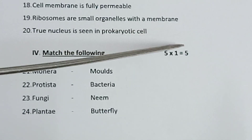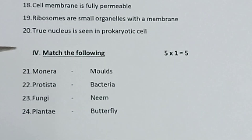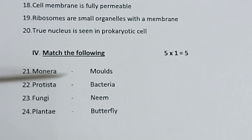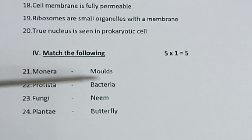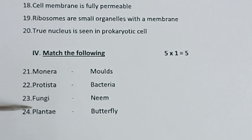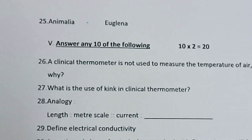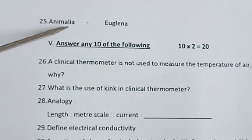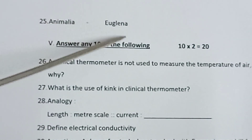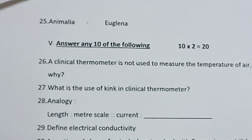Roman numeral four: Match the following. 5 into 1 is equal to 5. Left hand side — Monera, Protista, Fungi, Butterfly, Animalia. Right hand side (correct answers) — Moles, Bacteria, Planting, Euglena. Match the left hand side questions with the right hand side correct answers.